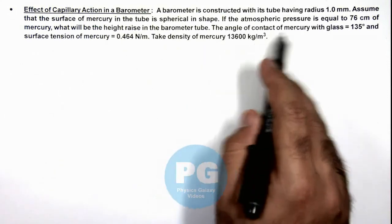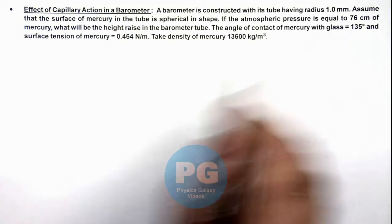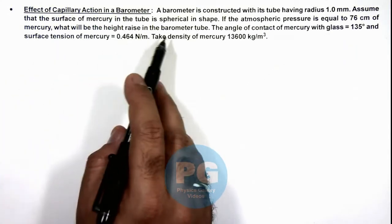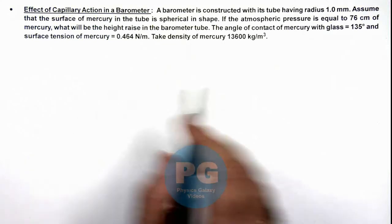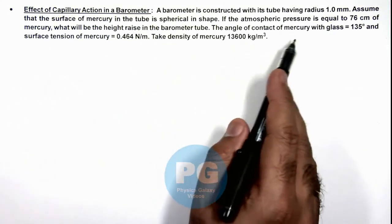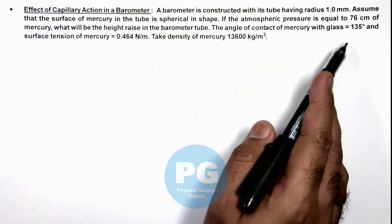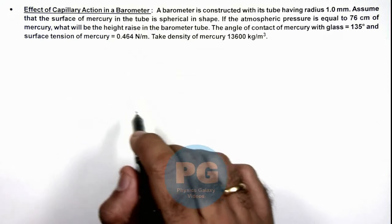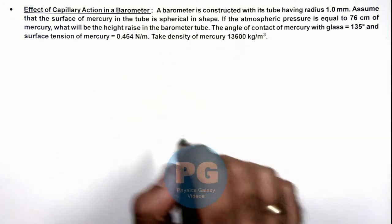If atmospheric pressure is 76 centimeter of mercury, what will be the height rise in the barometer tube? We are given that the angle of contact of mercury with glass is 135 degrees, surface tension of mercury is 0.464 newton per meter, and density is also given.